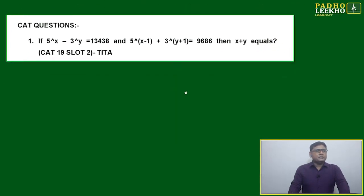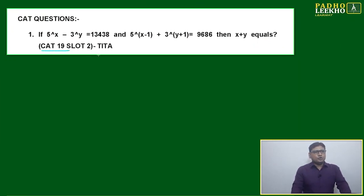This question is from CAT 19 Slot 2. It's a TITA-based question that looks very complicated. By seeing it the first time, you may feel unsure whether to attempt it in round one because the question is given in the form of power, and power is given in terms of variable. If variable is in the form of base, dealing will be easy, but if the variable is in the form of power, it's a little difficult. It looks like an algebra problem, but basically it's a numbers problem. How can we make this question much easier just by observation?